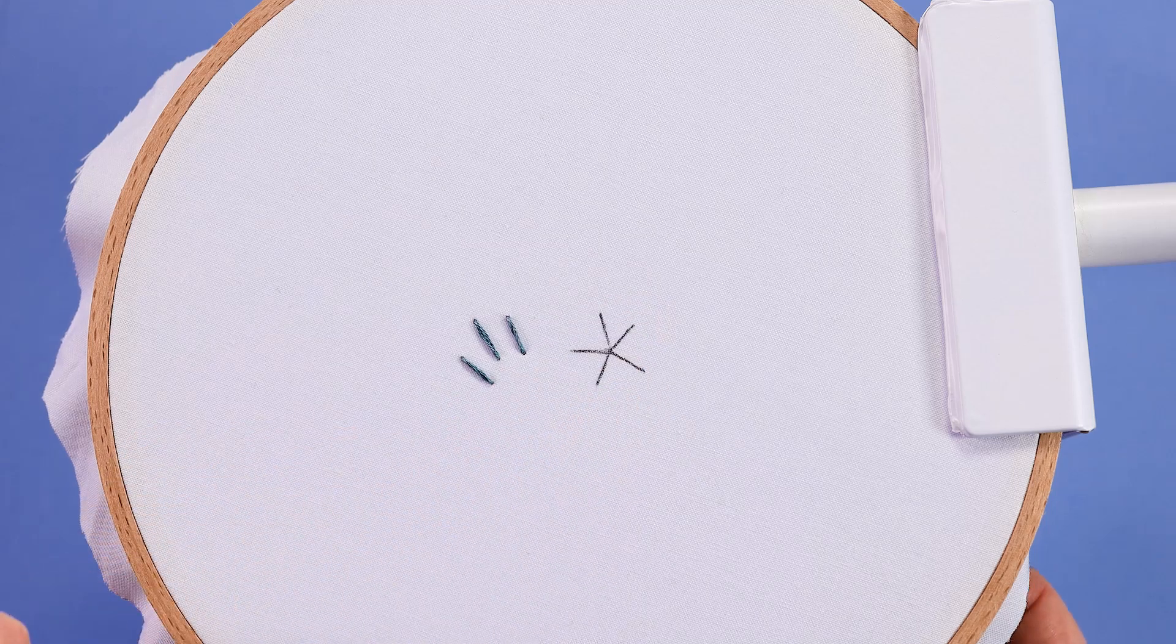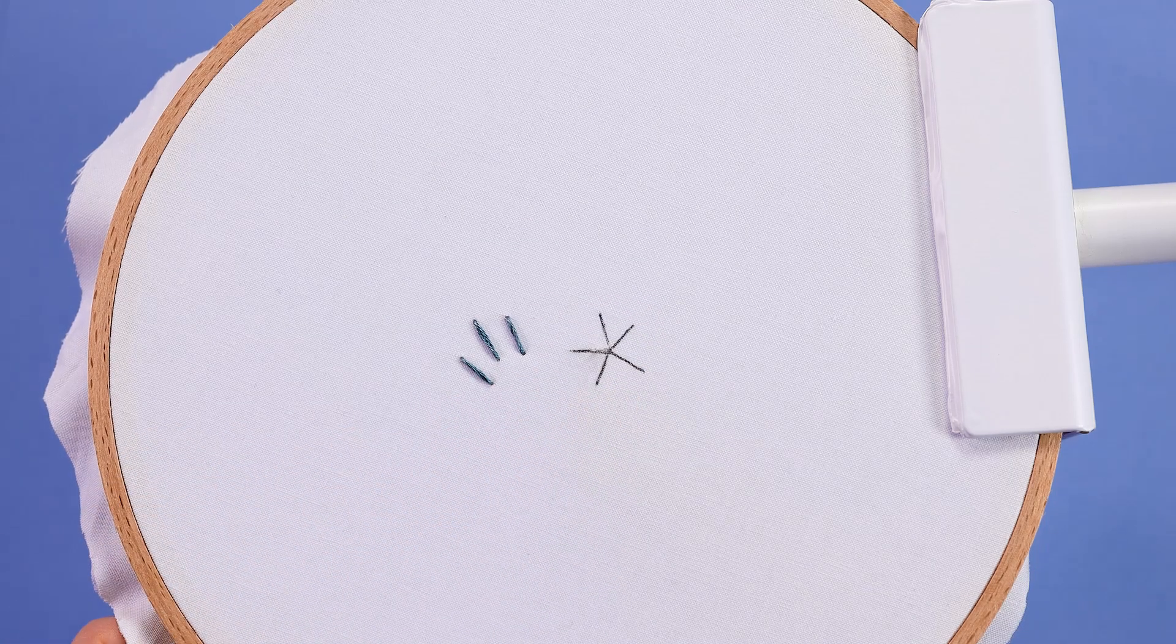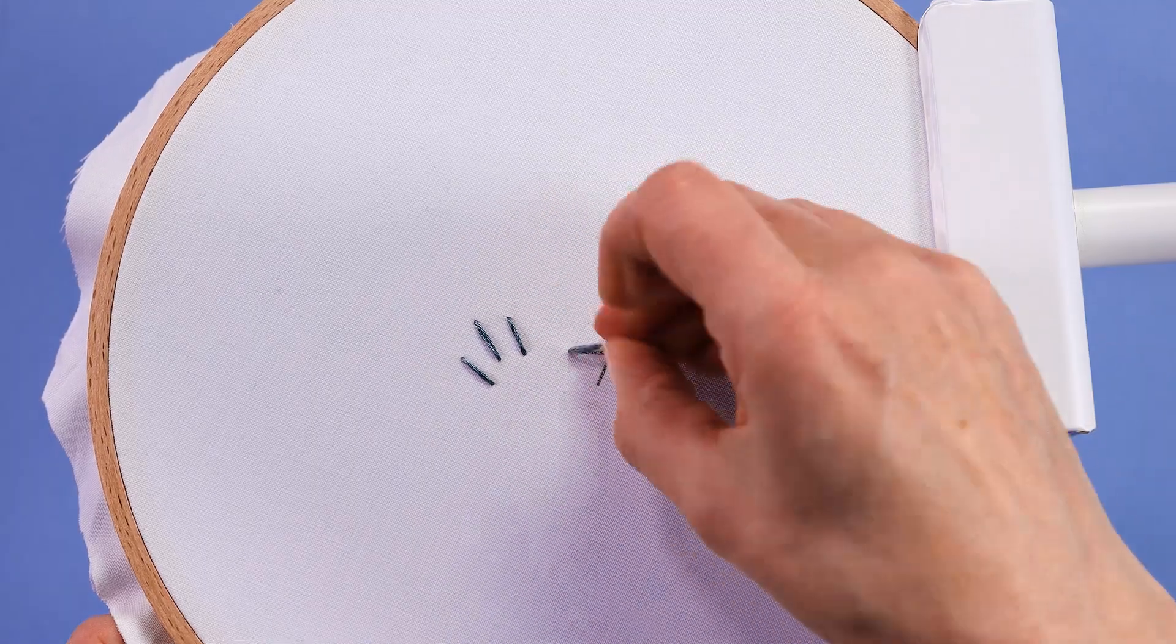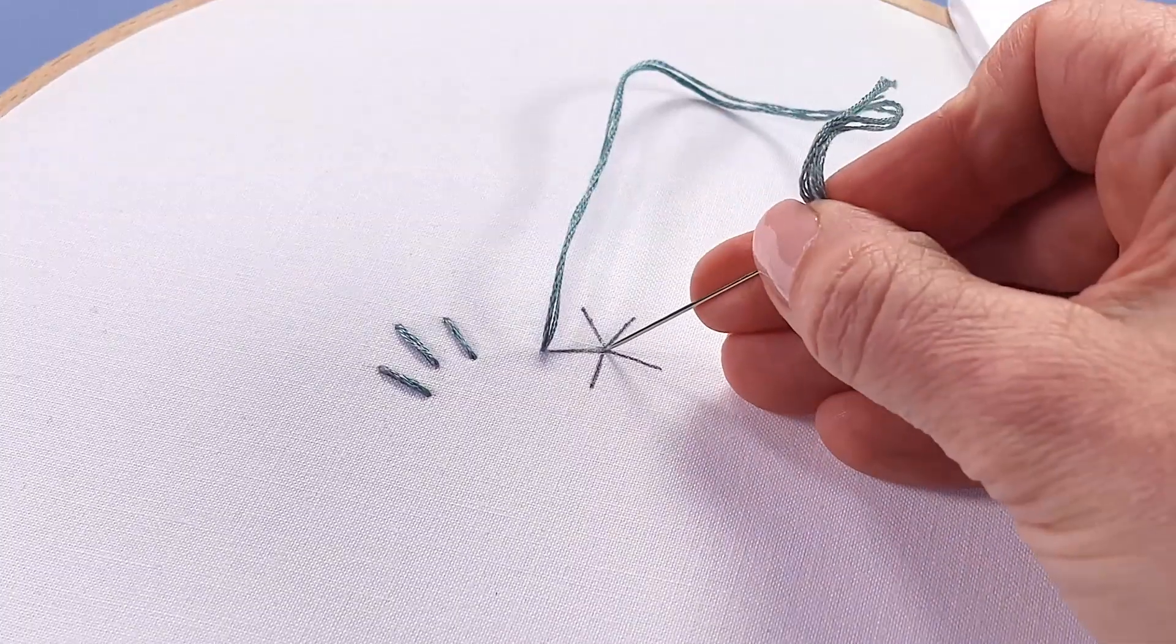Now sometimes you're working straight stitch and they might all end at a point. So when I do these, I like to bring my needle up at one end and then I poke down at the center.